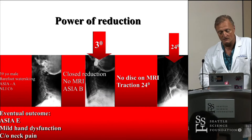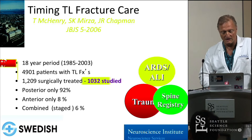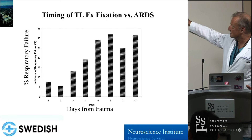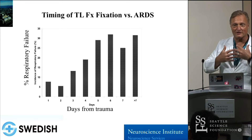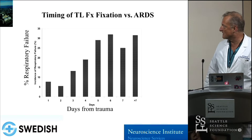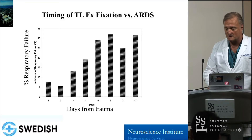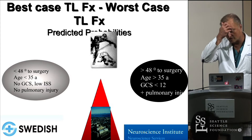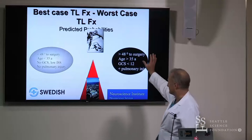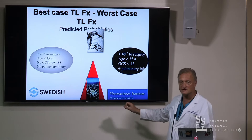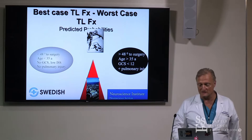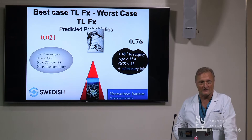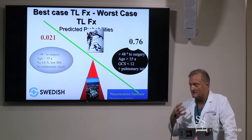We did a very large paper on timing. One of the biggest findings is the longer we wait, the higher the incidence of respiratory failure. Our spinal column and lungs are intimately entwined — lung health is very important for survival. The longer we wait from trauma, the more pulmonary deterioration we face. With over 1,000 patients, the worst case is waiting more than two days in a patient over 35, with GCS below 12 and pulmonary injury — the chance of dying is dramatically higher. The opposite gives an almost nonexistent chance of dying.